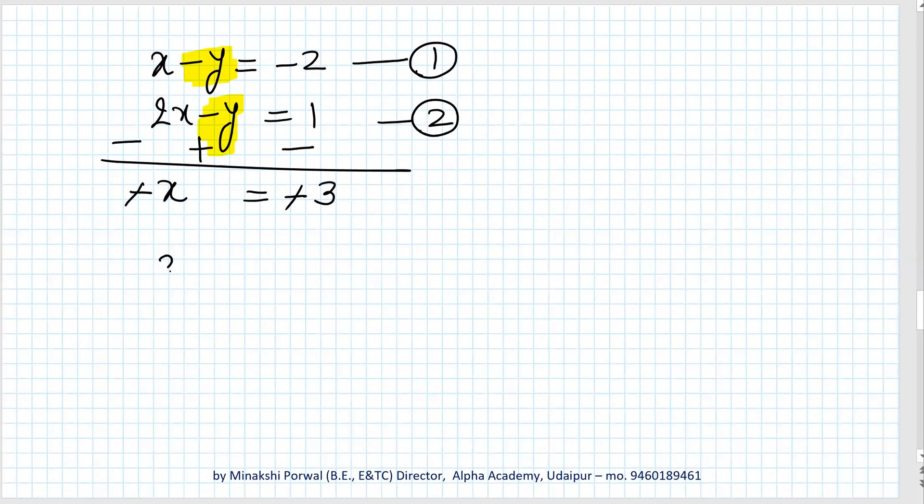Substituting x = 3 in equation 1: 3 - y = -2, so -y = -2 - 3 = -5, which gives y = 5. Therefore, the fraction is x/y = 3/5. This is the answer.